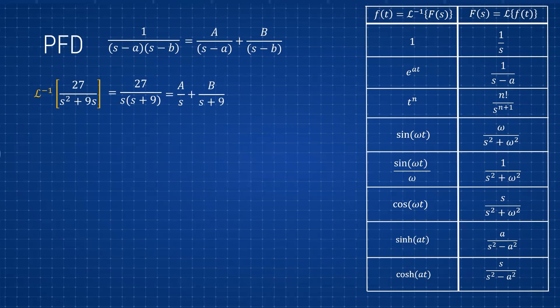If we take the inverse Laplace of A over s plus B over (s + 9), we factor out A and B and we're left with 1/s and 1/(s + 9) — both of which appear in our table, corresponding to 1 and e^(-9t) respectively. So we already know our inverse Laplace will be A plus B times e^(-9t). We just need to find A and B to complete the solution.